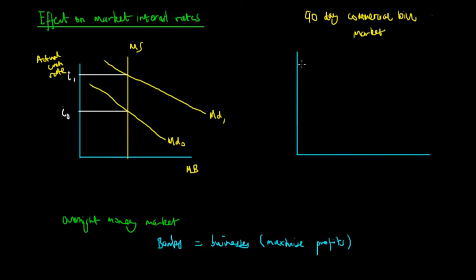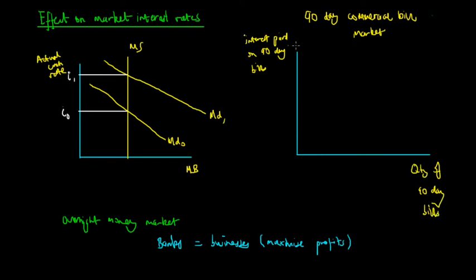With that in mind, we're going to look at the 90-day commercial bill market. The y-axis is the interest paid on 90-day bills, and the x-axis is the quantity of 90-day bills — price being the price paid and quantity being the quantity. The supply of bills, like every market, is upward sloping: at a high price, firms will issue more bills, resulting in a high quantity supplied.